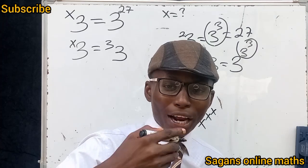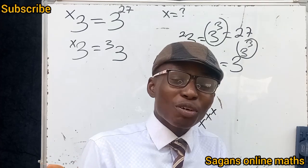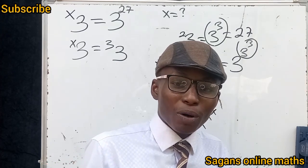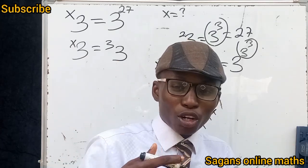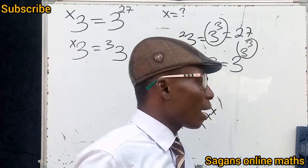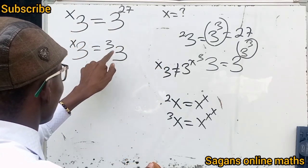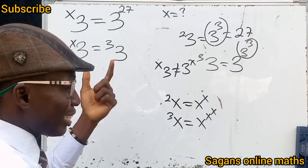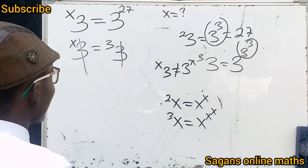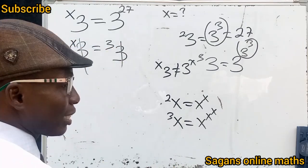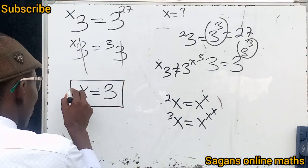Tetration simply means when a number is raised to the power of itself — can you see how simple that is? Now from here, since the bases are the same, we can equate the super-power index. We cannot call it a regular index because it's different — it's a tetration index. So we equate the super index, and we see that s is equal to 3. That is the solution to this problem.